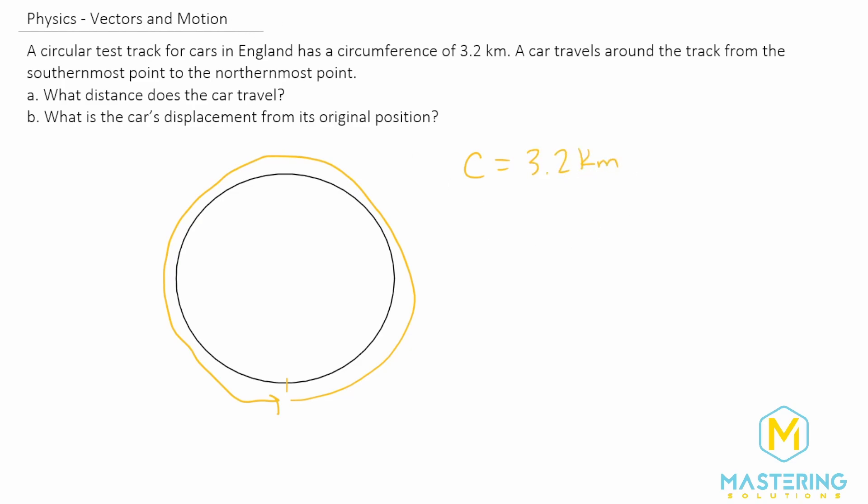Now for part A, they say what distance does the car travel? It starts right here at the most southern point, and then it travels to the most northern point and stops. So we just want half of the circumference. For part A, it's simply 3.2 kilometers divided by two, which gives us 1.6 kilometers.